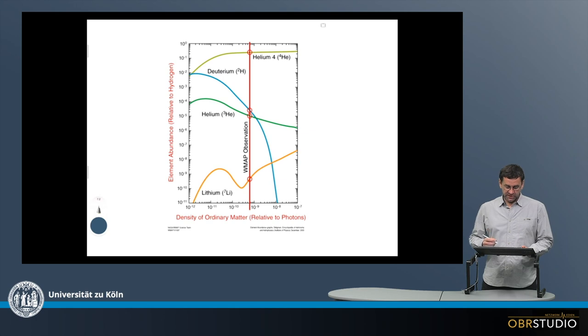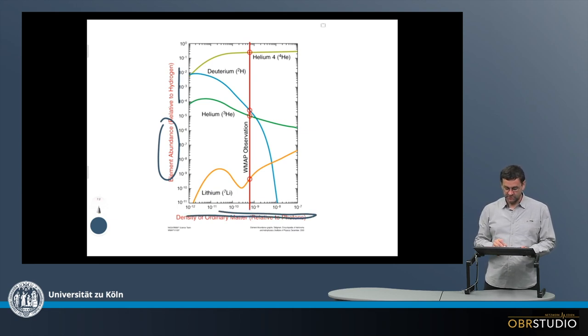This is what is shown here. On the y-axis is the element abundance relative to hydrogen. The density here, this is not too important, this wasn't meant like this. The important bit here is just the abundances.